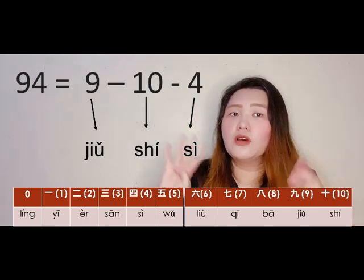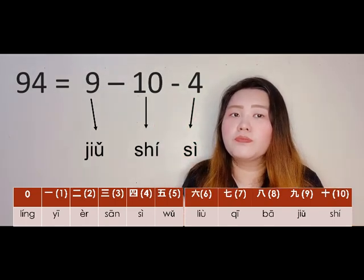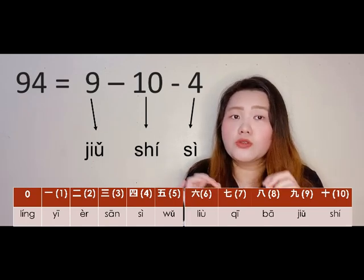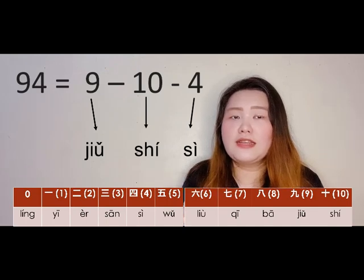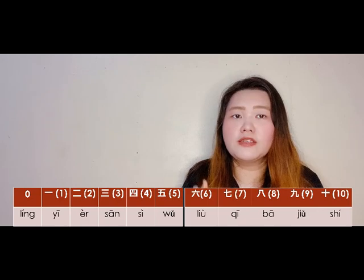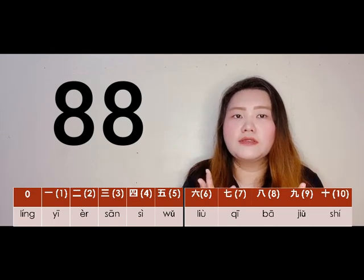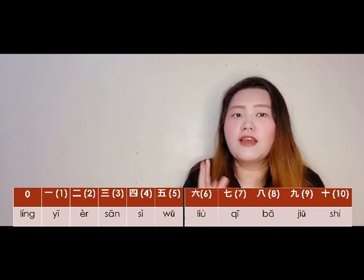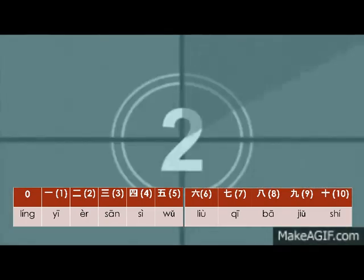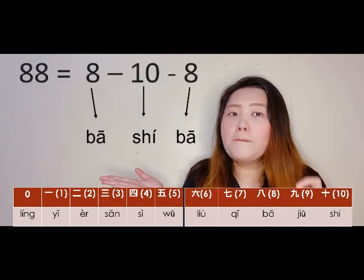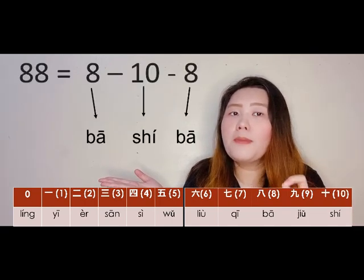So 90 is 九十 (jiǔshí), then 4 is 四 (sì), so 94 is 九十四 (jiǔshísì). Can you try this one — 88? I'll give you 3 seconds. The correct answer is 八十八 (bāshíbā). Very good!